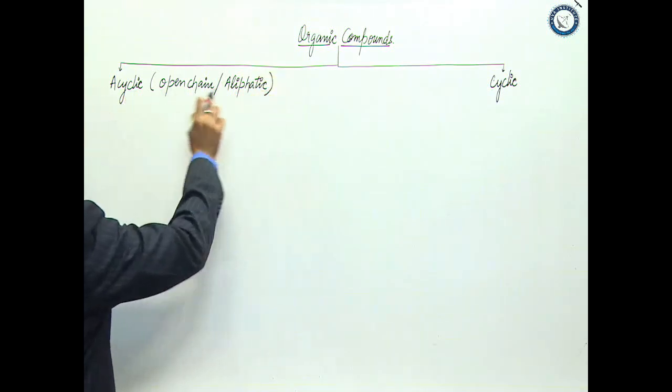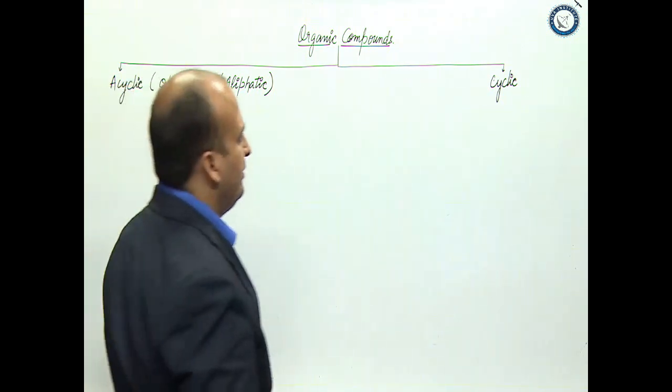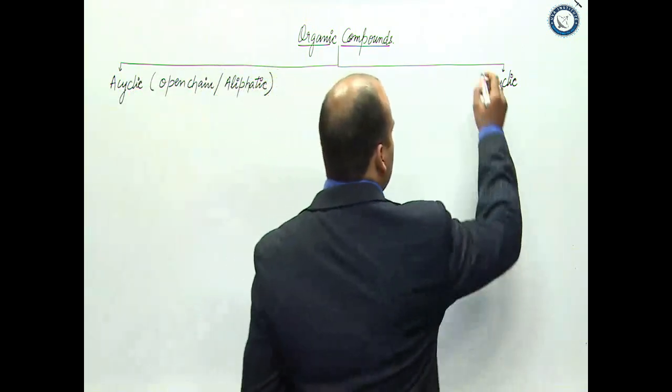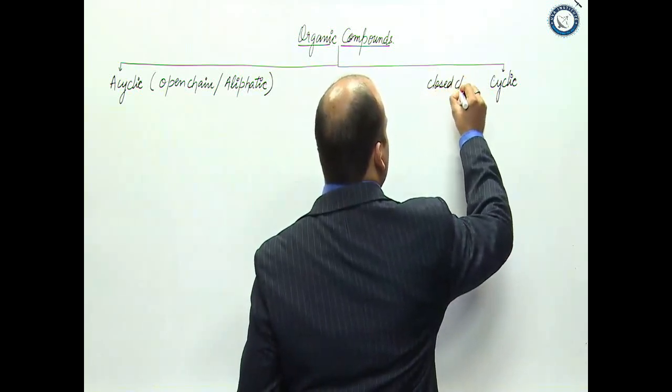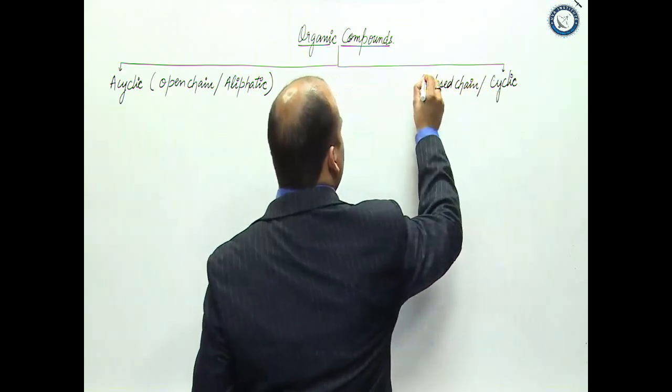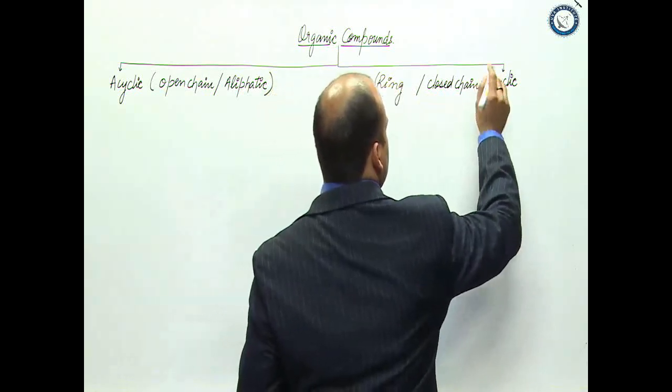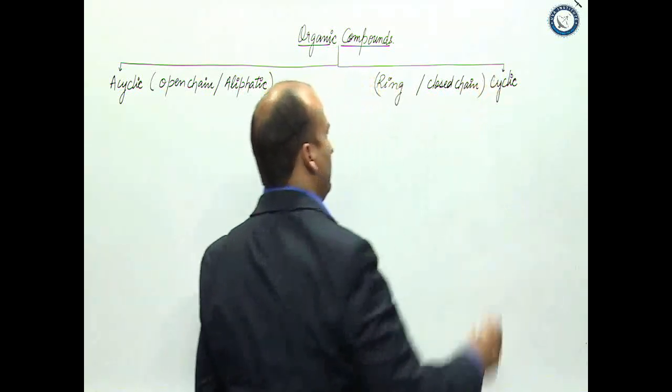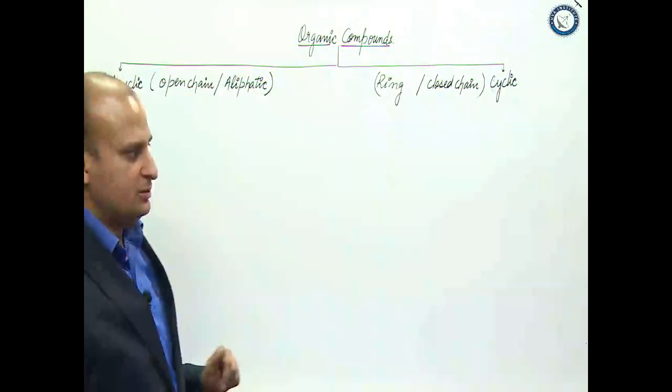So these three terms: cyclic, open chain, or closed chain. We can also say ring compounds, where rings are made. That primarily closed chain is as simple as that.